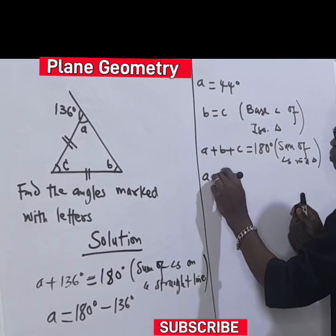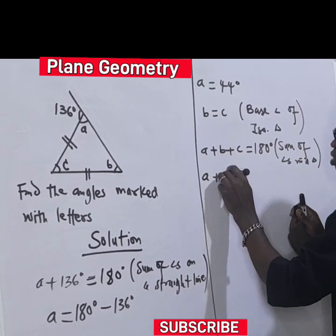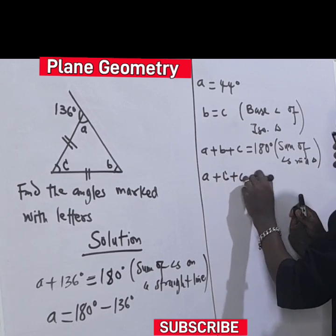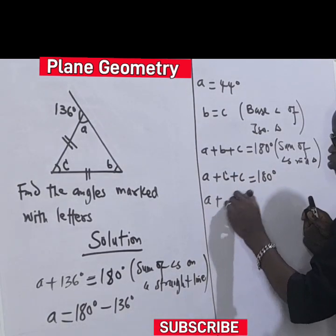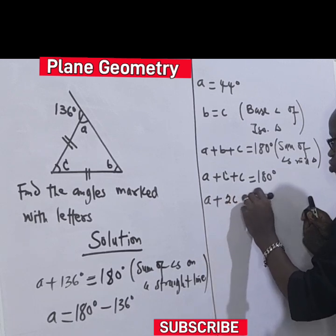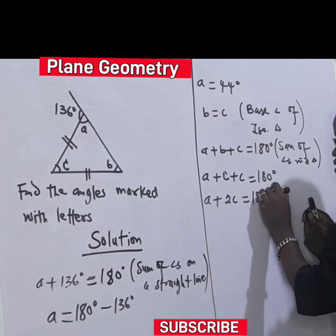So we have it as A plus C plus C equal to 180 degrees. This is A plus 1C plus 1C, to give us A plus 2C equal to 180 degrees.